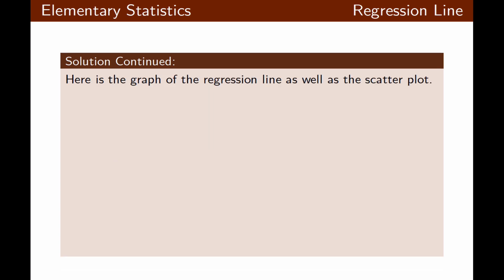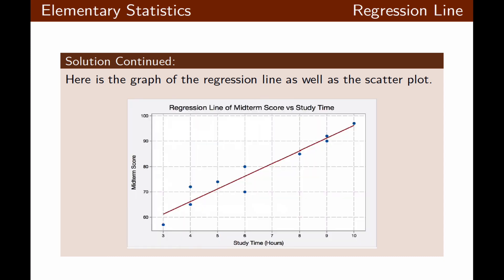Now let's look at the graph of the regression line as well as the scatter plot in the same coordinate system. As you can see, the line is very close to some of the points but not as close to others. We will discuss this in more detail shortly.